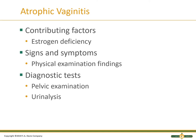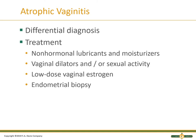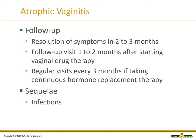Contributing factors: we know it's a deficiency of estrogen. We look at the physical exam findings, do a pelvic exam, check their urine just to make sure we're not missing anything on the urinalysis. Do they have a urinary tract infection? Is there something more going on? When we look at the differential diagnosis and the treatment plan, the non-hormonal lubricants and moisturizers help restore the vaginal wall. Vaginal dilators and sexual activity come into play. Low-dose vaginal estrogen is an option, and then there's an endometrial biopsy that can also give a definitive diagnosis. Follow-up for resolution of symptoms is two to three months.